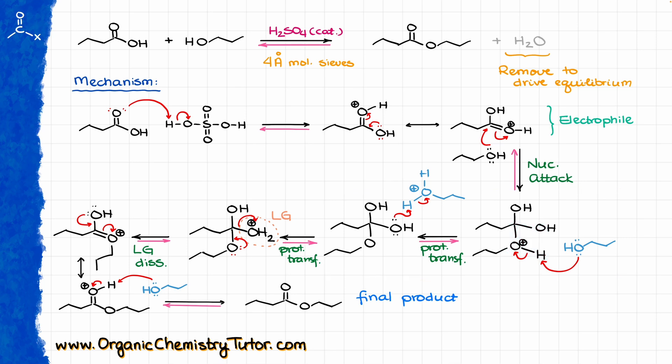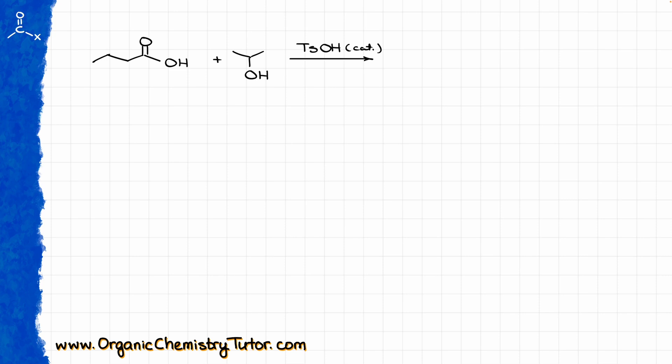Knowing the mechanism is important, however you probably won't have enough time on the exam to draw the full mechanism for every version of this reaction. So it's equally important to be able to visualize the product without going through the entire mechanism. For instance, let's say we have a reaction between butanoic acid and isopropanol using tosylic acid as our catalyst. I can use a visualization trick to figure out the product without working through the full mechanism.